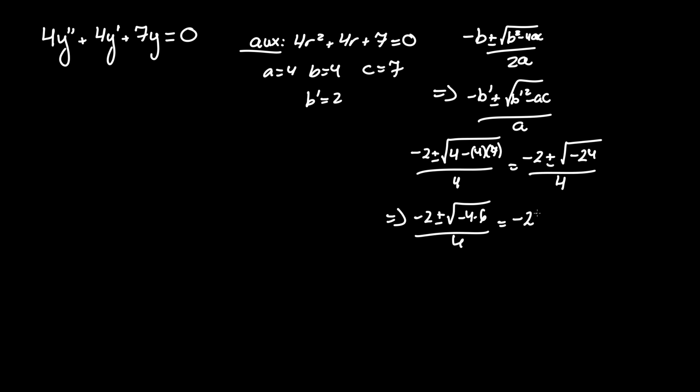And we can take out the negative 4 from the radical to become 2i, where i equals radical negative 1, plus minus 2i radical 6 over 4.